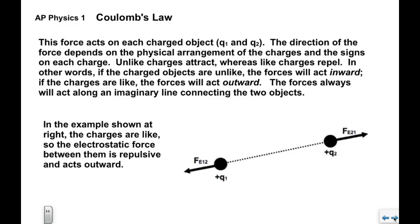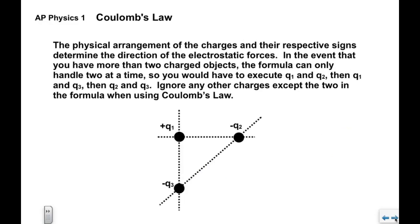In this example, the charges are alike — both positive — so the electrostatic force between them is repulsive and acts outward, along the line that connects the two objects. The physical arrangement of the charges and their respective signs determine the direction of the electrostatic forces.